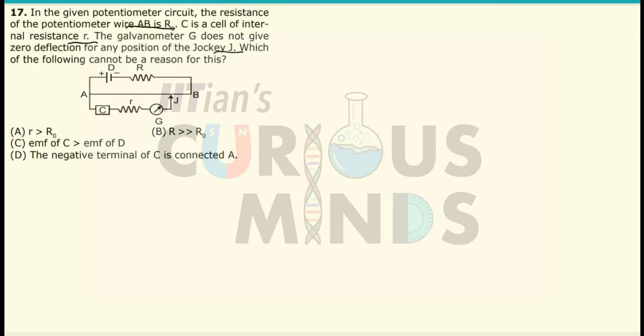R is the resistance. I can say that option number B should be R is very large as compared to R0. So over here, the total resistance or the resistance connected will be very large as compared to R0.